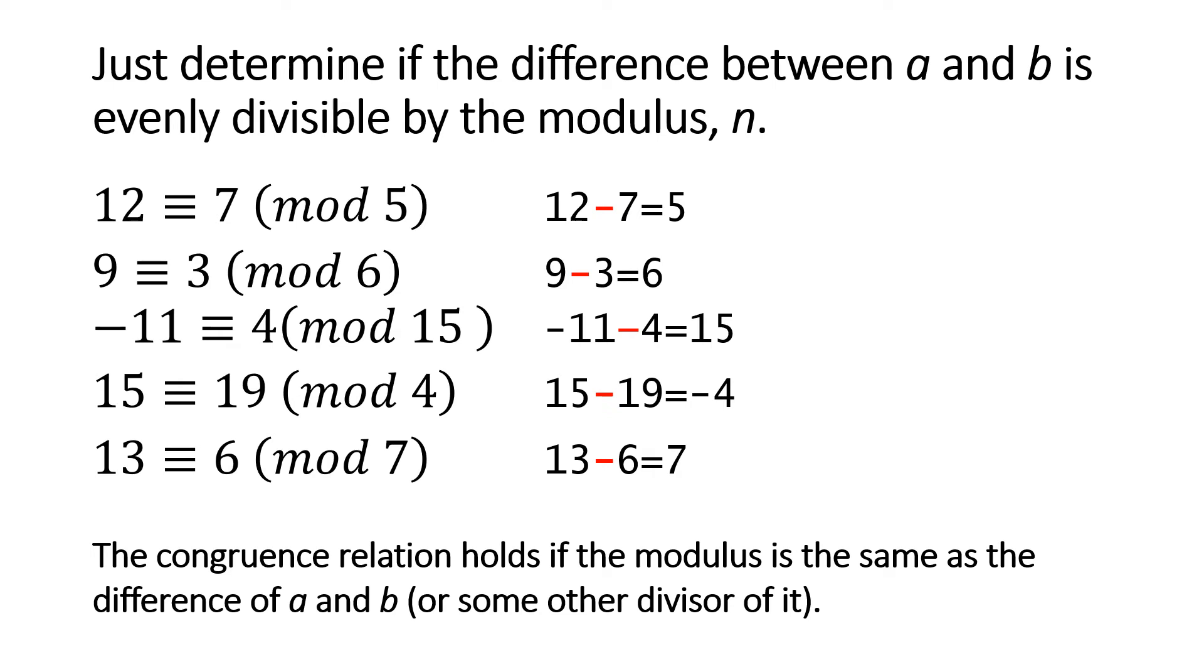So that holds true. 15 is congruent 19 mod 4, and that holds true because 15 minus 19 is minus 4.